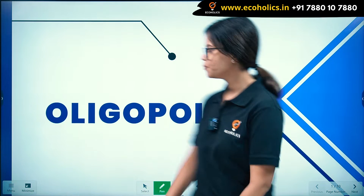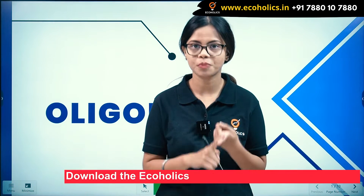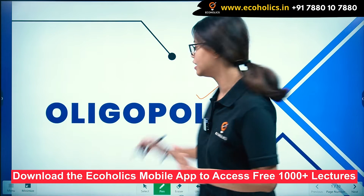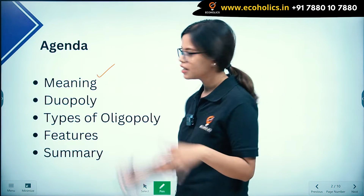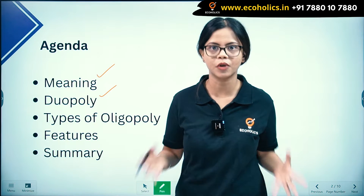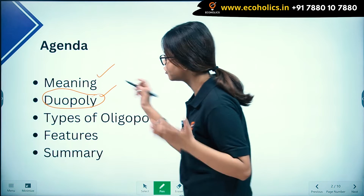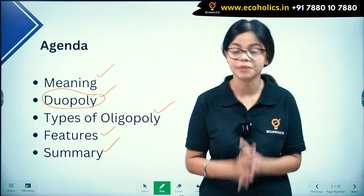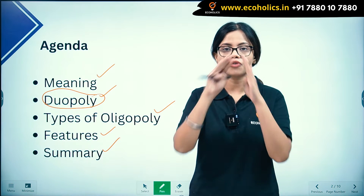Hello and welcome to Ecoholics. In this video we will be understanding oligopoly. We have already learned different forms of market — monopoly, monopolistic competition, and perfect competition. Now it is time for the fourth form of market, oligopoly. Today we will understand the meaning of oligopoly, duopoly as a special case, types of oligopoly, features, and then a summary comparing all forms of market.